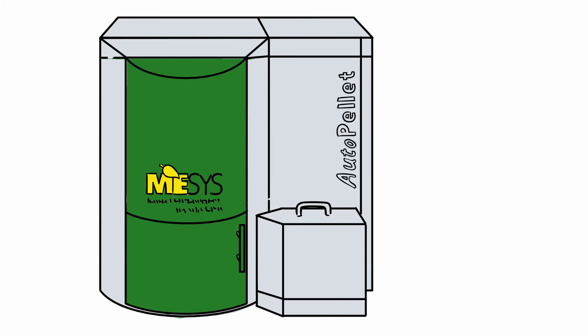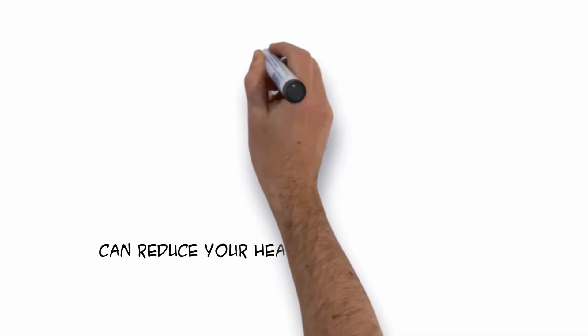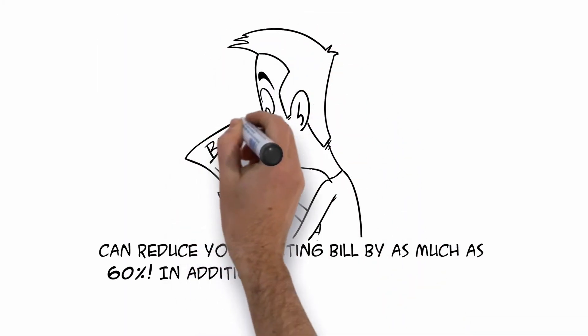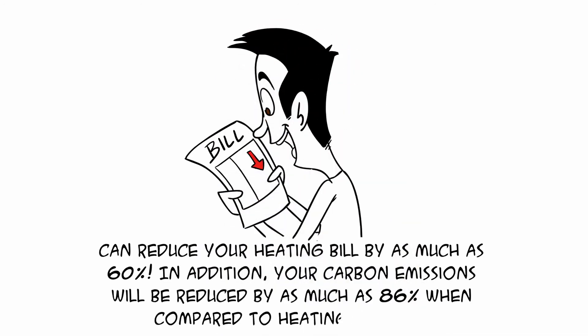What's that, you ask? The Mises Auto Pellet is the world's finest fully automatic wood pellet central heating system that can reduce your heating bill by as much as 60% and carbon emissions by 86% when compared to heating with oil.